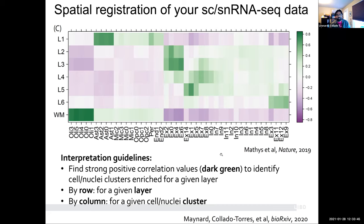This is a way of trying to bring in data from these two high-throughput technologies together. Remember that on the spatial data, we're looking at expression across a spot that is 55 micrometers in diameter and can contain more than one cell. So the spatial transcriptomics platform is not truly single-cell resolution, which is why you might need to combine the two assays.